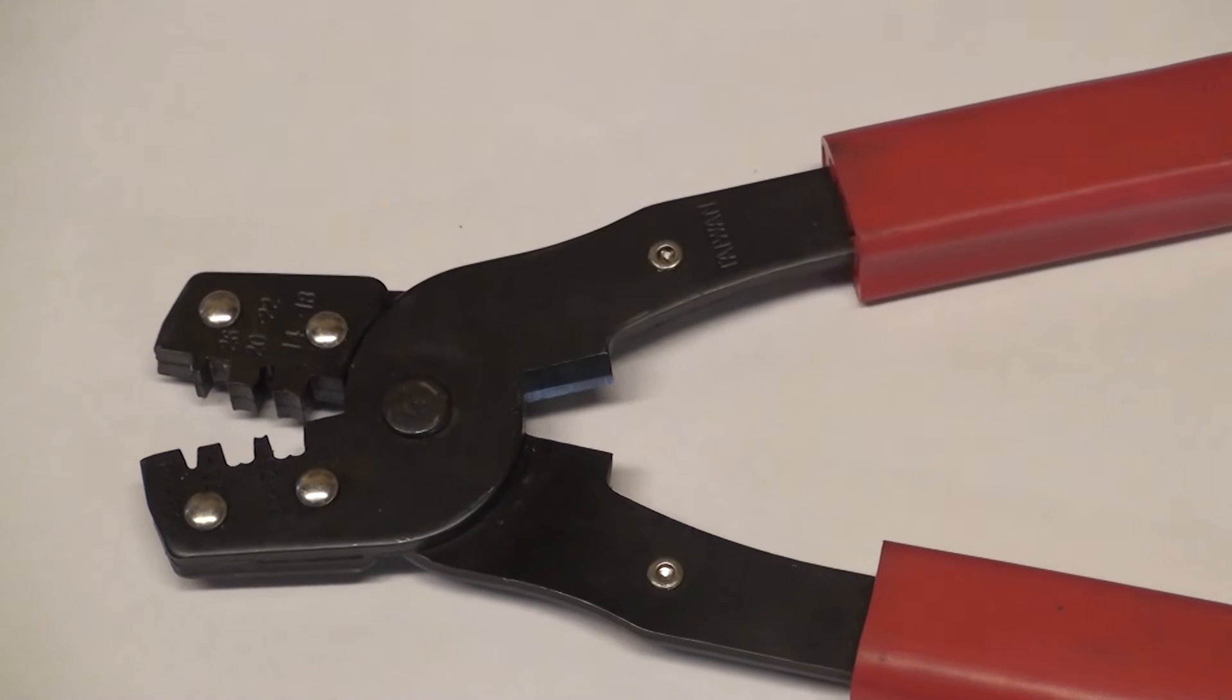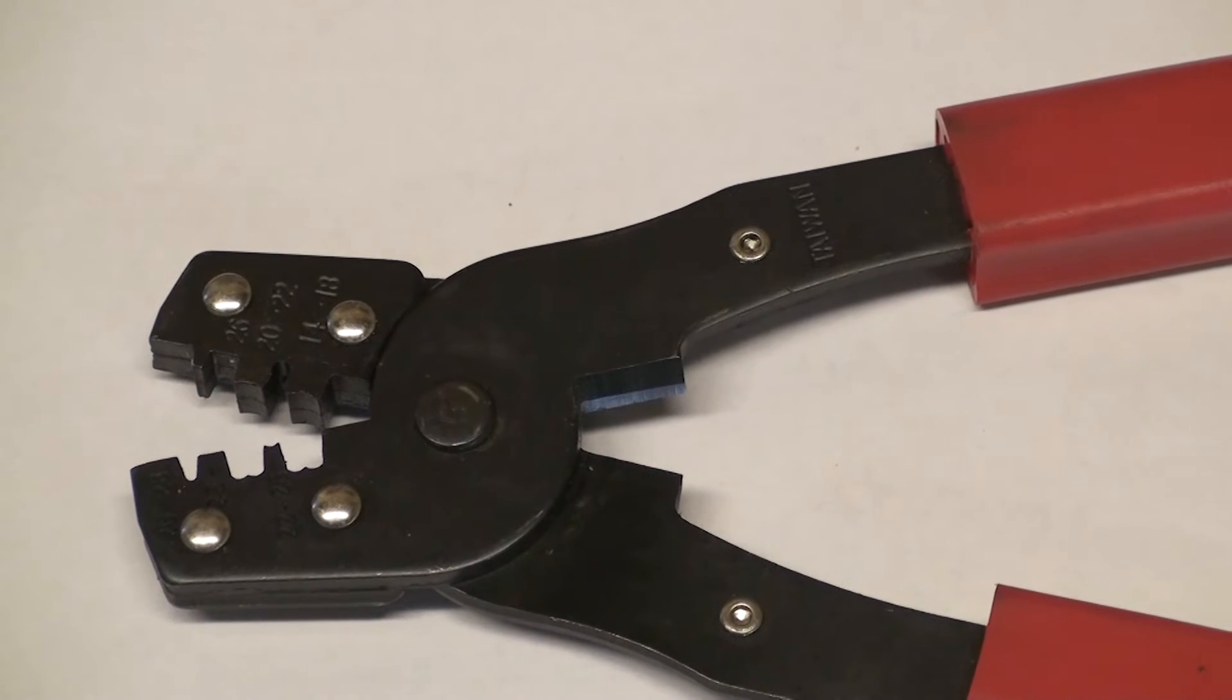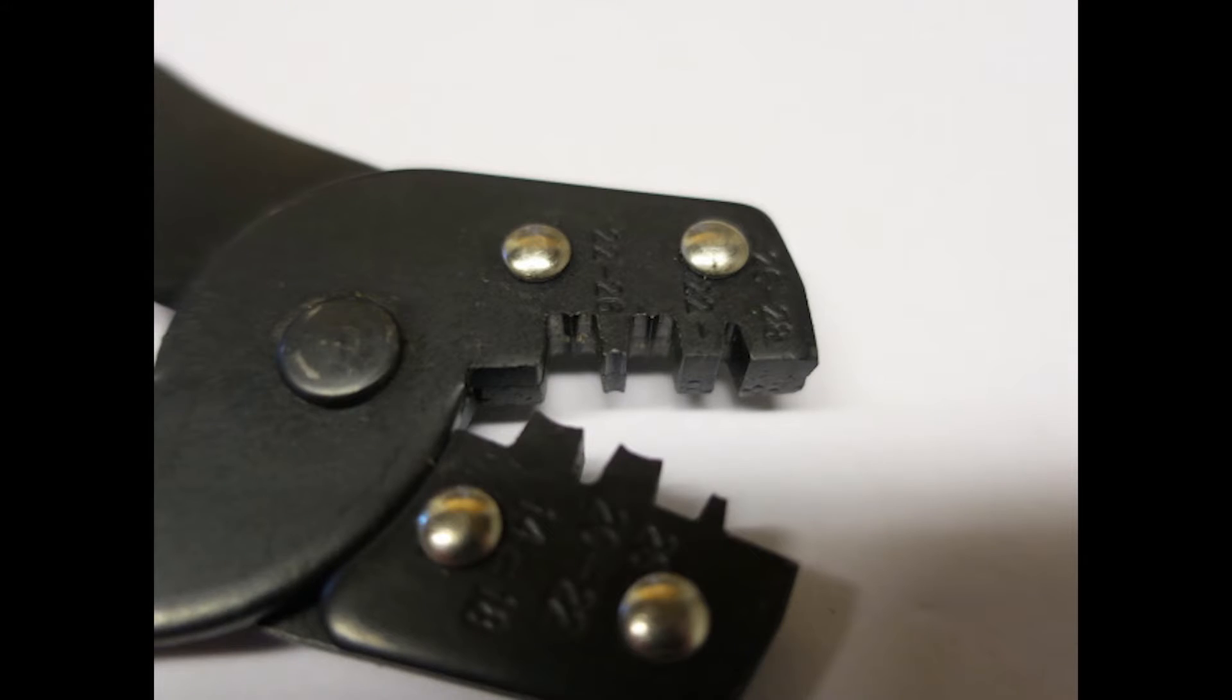The crimping process is simple but uses a different type of crimping plier. The jaws have a slight ridge in the middle to force the wings to curve into the center of the wire.